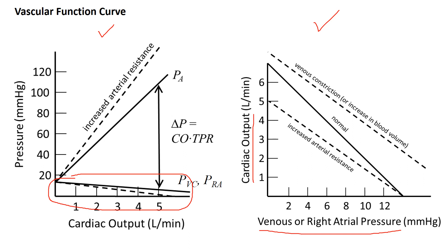Another way to think about this is to think of the heart as an artificial pump. If the pump is not working well and its output is low, fluid is expected to build up on the inlet side of the pump — the venous side. Decreased cardiac output causes venous pressures to increase. This curve is sometimes called the vascular function curve. Increasing arterial resistance makes venous pressure drop at a given cardiac output.